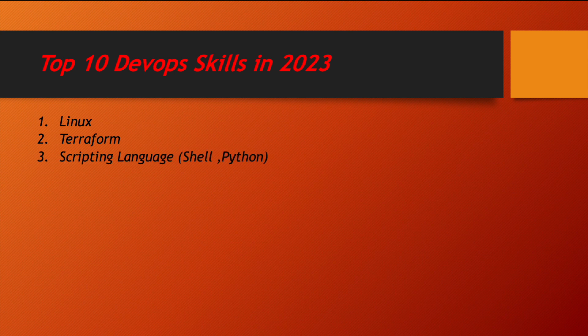Once you know Linux and Terraform, what is next? The next and most important thing is that you should have a lot of knowledge on a scripting language — Shell or Python. Many people ask whether they should learn Python first. Definitely Python is good to learn, but first make sure you are comfortable with Shell scripting. Without Shell, it's not a good idea to directly jump to Python.